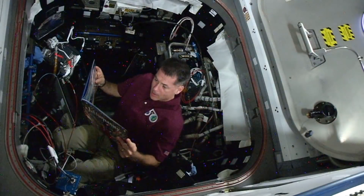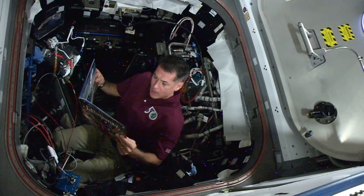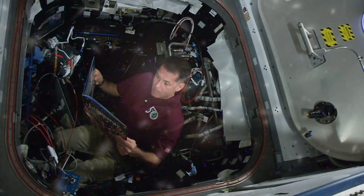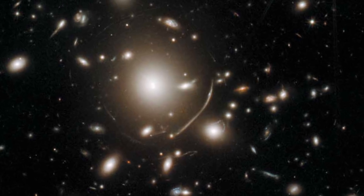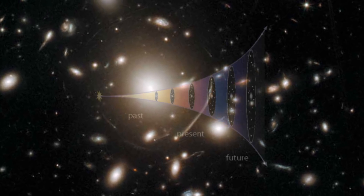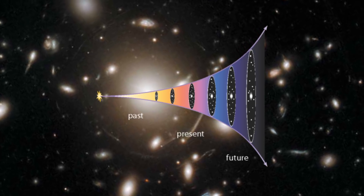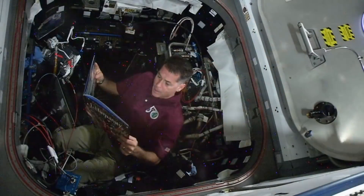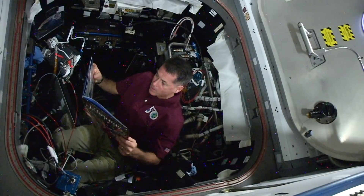Despite all I've learned, I still have many questions left to answer. I know what planets and stars are made of, but I've discovered that galaxies also contain a mysterious dark matter whose nature still eludes me. Stranger still, I've discovered that the galaxies are moving apart faster today than long ago. And while I sometimes say this is caused by dark energy, I really don't know what it is or why it exists.